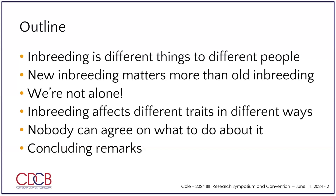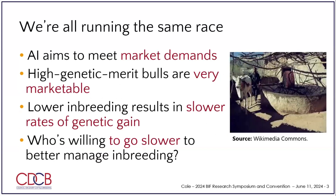To sort of set the stage: we're all running the same race. The race looks a little bit different because a lot of you may be working with bulls rather than with a lot, but that doesn't really change anything. I talk about AI in the sense of AI companies, but you could think of this as genetic companies — they either want to sell you semen with high genetic merit or bulls of high genetic merit. The higher the genetic merit, the more marketable they are.